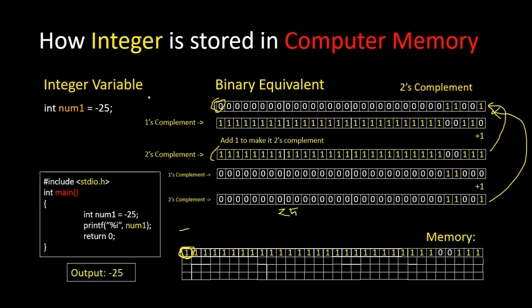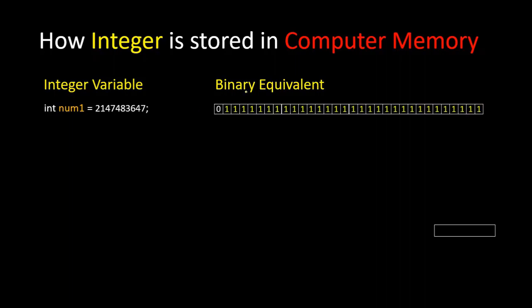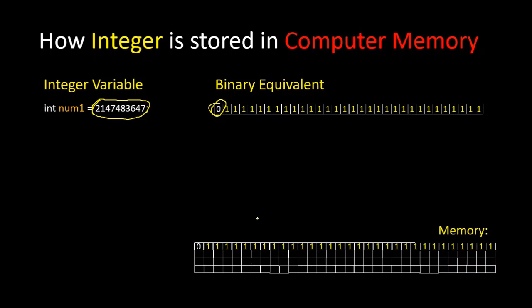That's how two's complement works — it is the way of storing and detecting negative integers. You might ask: what if we have a positive integer where the leftmost bit is 1? That's a great question, but for a positive integer there is no chance for the leftmost bit to be 1. If we convert a large positive integer into binary, we will see that the leftmost digit is still 0, so there is no chance of the leftmost bit being 1 for positive integers.